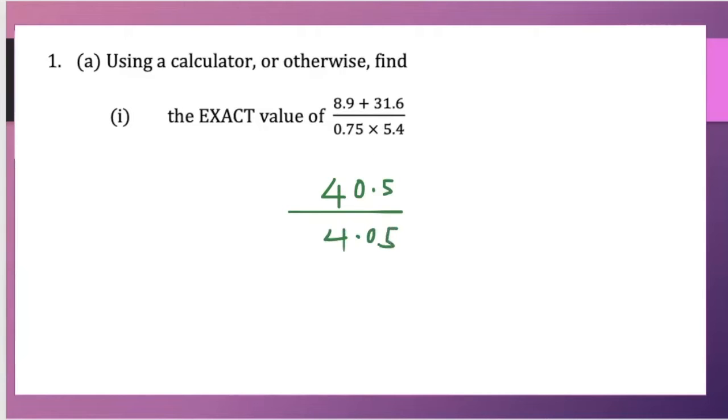Then dividing this you're going to say 40.5 divided by 4.05 and our exact value will be 10. And that's it.